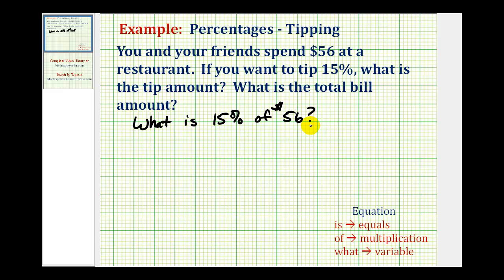Now let's write our percent equation using these key words. The first word we see is what, which represents the unknown or variable. Let's call this t for tip. So we have t is means equals.